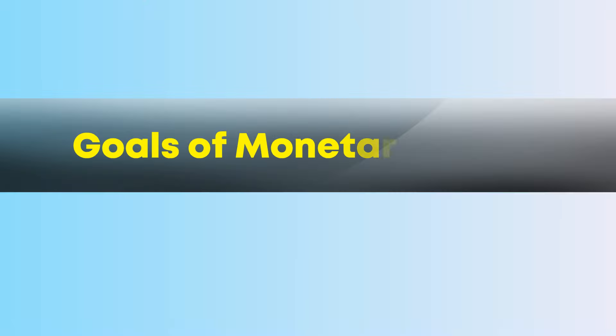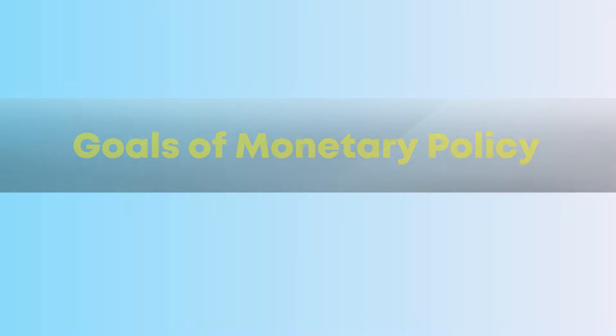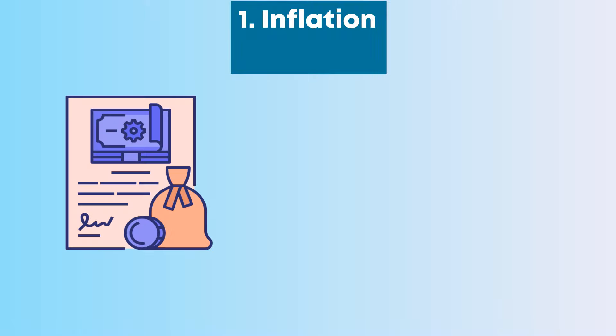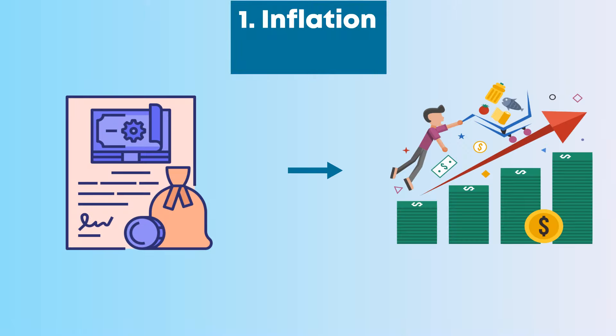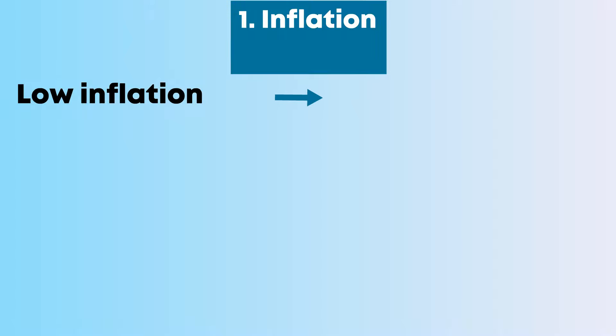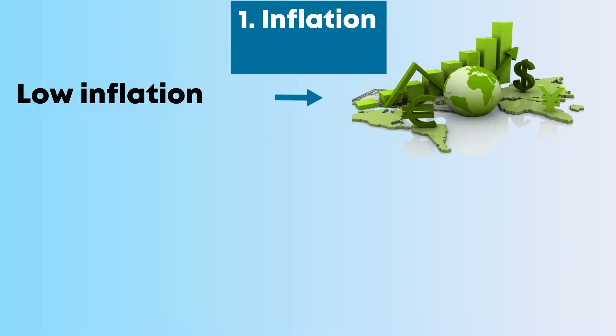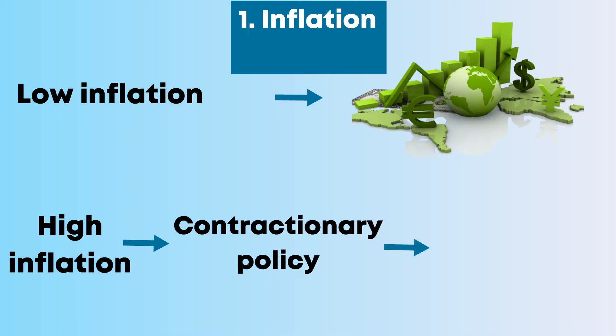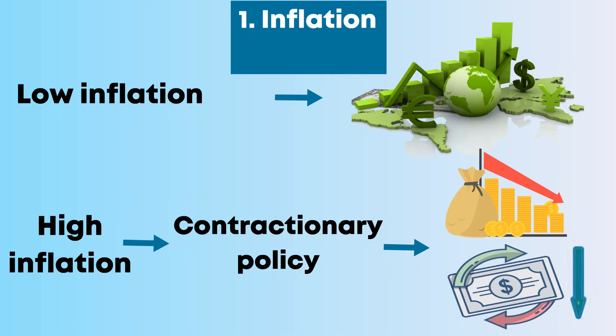What are the main goals of monetary policy? First, inflation. Monetary policies can target inflation levels. A low level of inflation is considered to be healthy for the economy. If inflation is high, a contractionary policy can be used to temper inflation and reduce the level of money circulating in the economy.